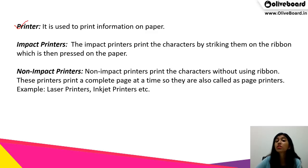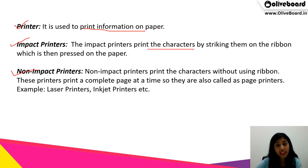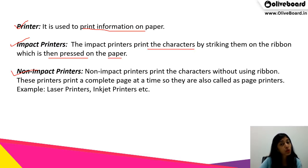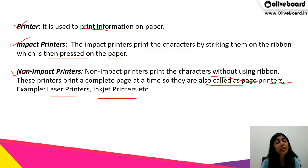The next output device is a printer, used to print information on paper — converting a soft copy into a hard copy. There are two types of printers: impact printers and non-impact printers. Impact printers print characters by striking them on a ribbon which is then pressed on the paper. Non-impact printers print without using a ribbon and print a complete page at a time, so they are also called page printers. Laser printers and inkjet printers are all non-impact printers.